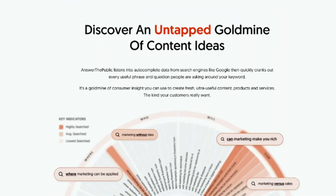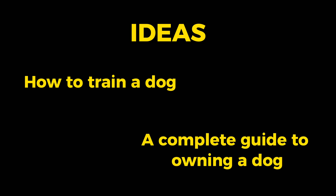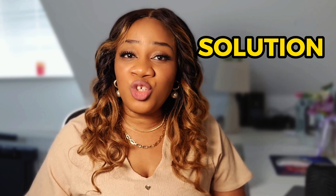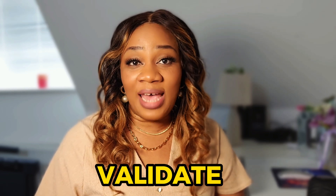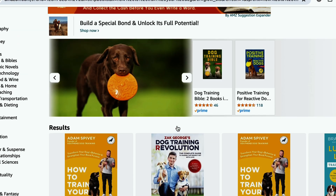You can also use sites like Answer the Public to find out what questions and queries consumers within your niche have. Then you can come up with ideas like 'how to train your dog' or 'a complete guide to owning a dog.' The possibilities are endless — you just need to ensure that your book is providing a solution to a specific problem. Once you have a specific idea and topic, it is time to validate your idea to ensure that it is in demand, because you don't want to write a book that would only be read by your mom and dad.